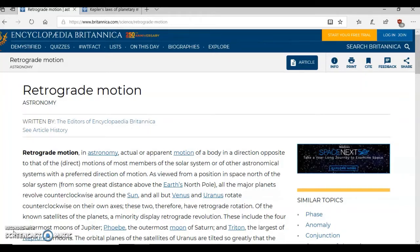As viewed from a position in space north of the solar system from some great distance above the earth North Pole all the major planets revolve counterclockwise around the Sun and all but Venus and Uranus rotate counterclockwise on their own axis. These two therefore have retrograde rotation.